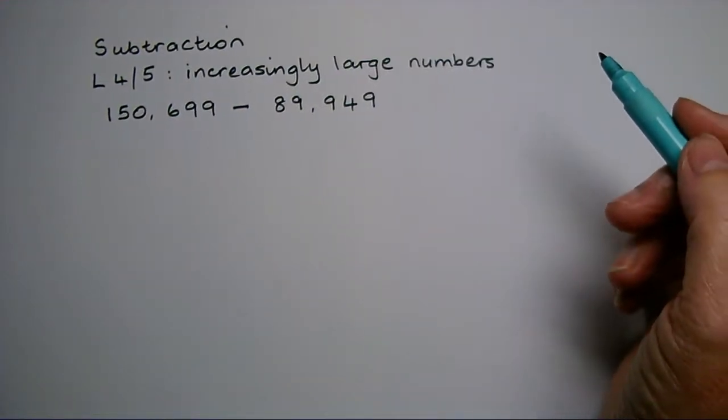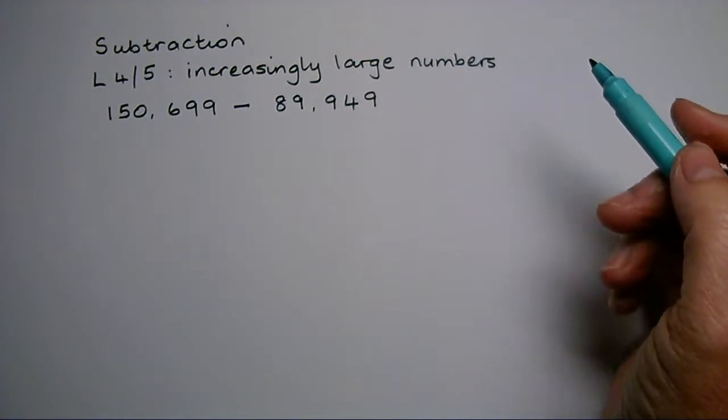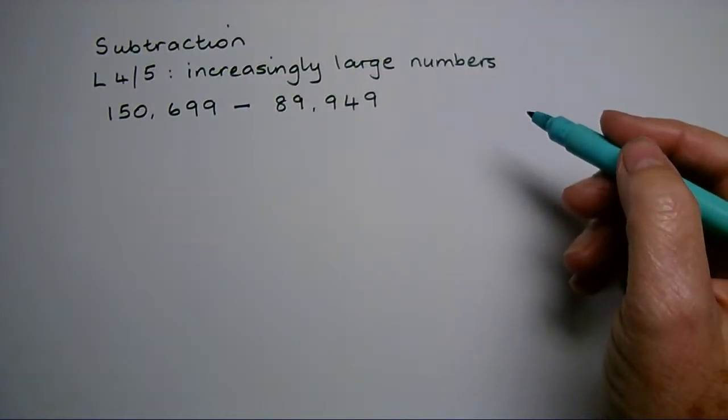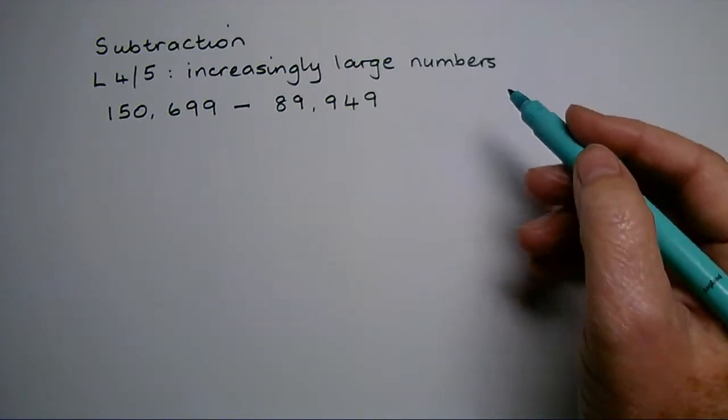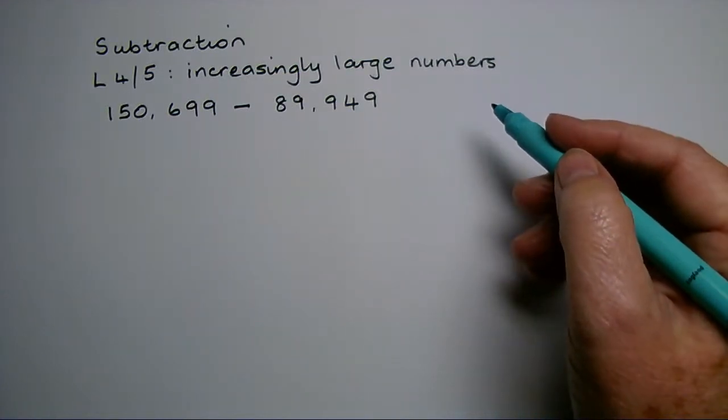No matter how large the number that I need to subtract, I still follow the same principle as always. I line the numbers up underneath each other using place value. Always the right-hand column, the units, must be the one that lines up.